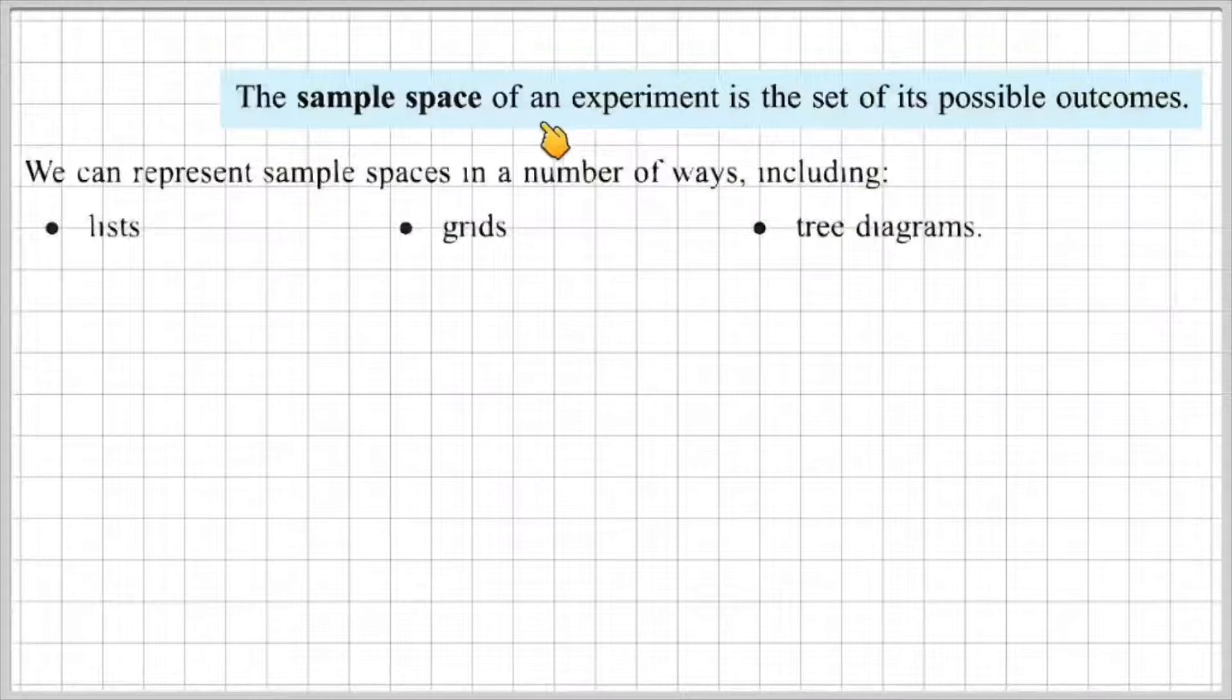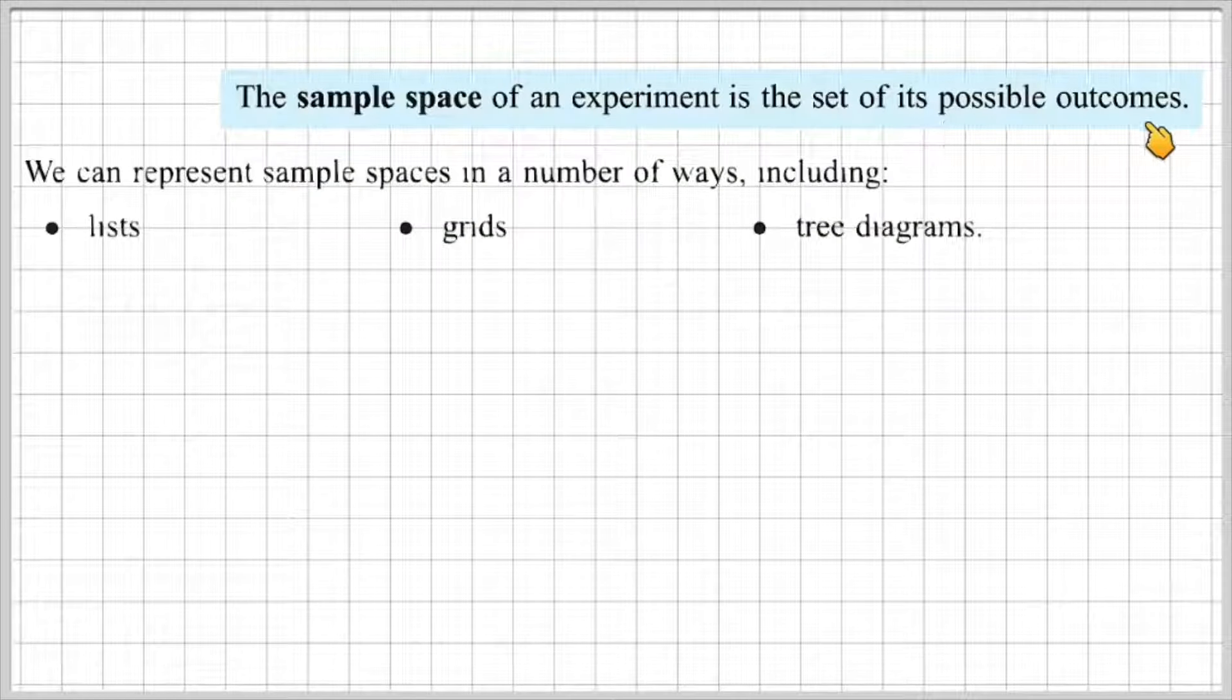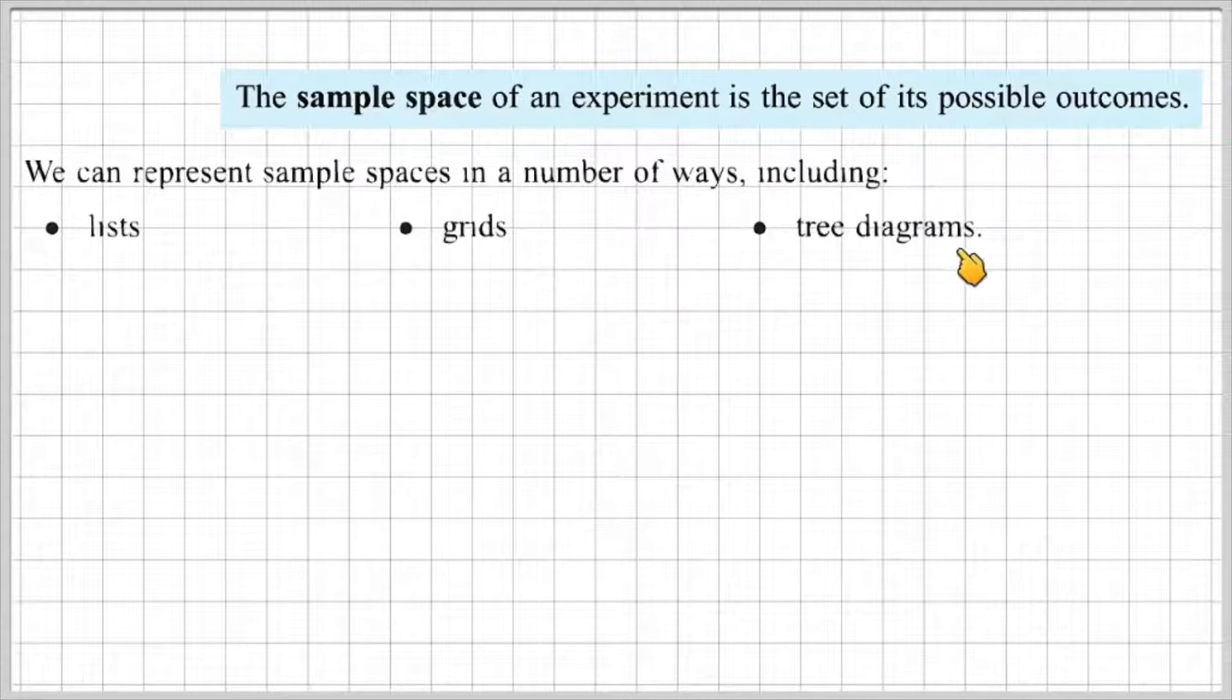The sample space of an experiment is a set of its possible outcomes. We can represent sample spaces in a number of ways including lists, grids and tree diagrams.